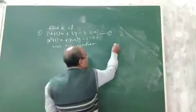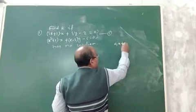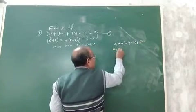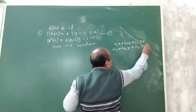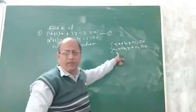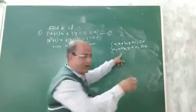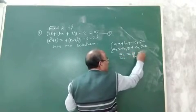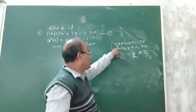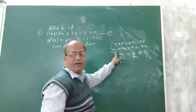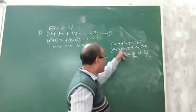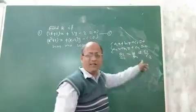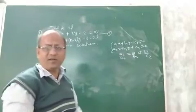Children, we know that a pair of linear equations of the form a1x + b1y + c1 = 0 and a2x + b2y + c2 = 0 has no solution under the condition: a1/a2 = b1/b2 ≠ c1/c2. That means the ratio of the coefficients of x from the first and second equations equals the ratio of coefficients of y, but it will not be equal to c1/c2. If this condition is satisfied, the pair of linear equations has no solution.